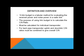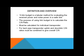Definition and overview. A link budget is a tabular method for evaluating the received power and noise power in a radio link. The purpose of using a link budget is to calculate the C/N ratio, and it must be calculated for individual transponders.